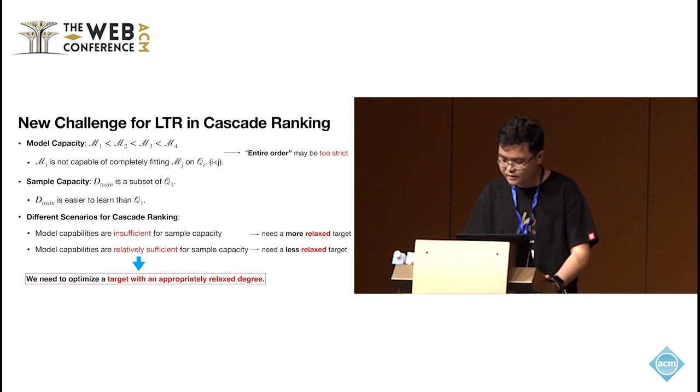Sometimes, we may face another situation that the data is simpler, since the training samples may be in a very small amount. At this time, a less relaxed target would be better. Thus, it's a new challenge for LTR methods to deal with these different scenarios in Cascade ranking. We need to optimize a target with an appropriately relaxed degree. Finding the most suitable learning targets through trial and error with hand-crafted targets is highly time-consuming and labor-intensive. Another challenge is mainstream learning to rank methods are often designed for optimizing entire or top-K order, corresponding to NDCG and NDCG at K. So, it may be lacking in optimizing some relaxed targets.